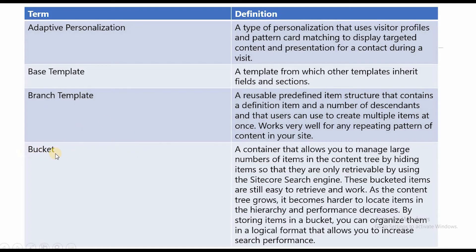Moving to the next term: what is a bucket? A bucket is a container that allows you to manage a large number of items in the content tree by hiding items so they are only retrievable using Sitecore's search engine. These bucketed items are still easy to retrieve and work with. As the content tree grows it becomes harder to locate items in the hierarchy and performance decreases, but by storing items in a bucket you can organize them in a logical format that increases search performance.